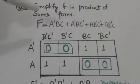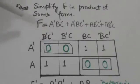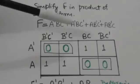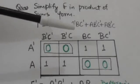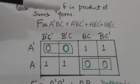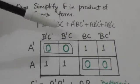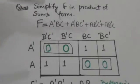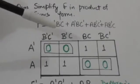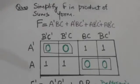Now we know that those minterms which are not included in this function — their sum represents the complement of the function. Those squares which are not marked by 1, the area enclosed by them represents the complement of the function f. So those squares which are not marked by 1, I have marked them by 0.